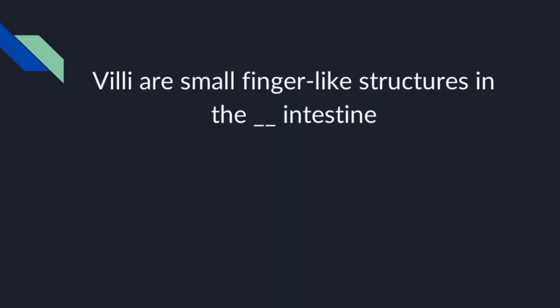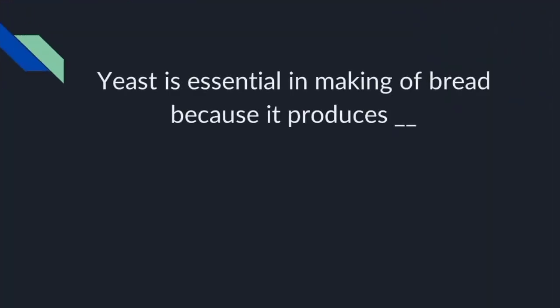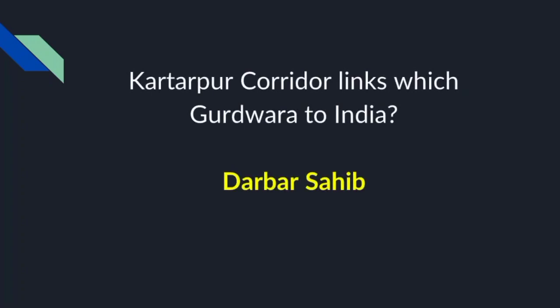Villi are small finger-like structures in the small intestine. Yeast is essential in making bread because it produces carbon dioxide. Kartarpur Corridor links which Gurdwara to India? Darbar Sahib.